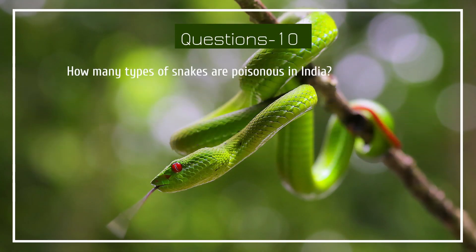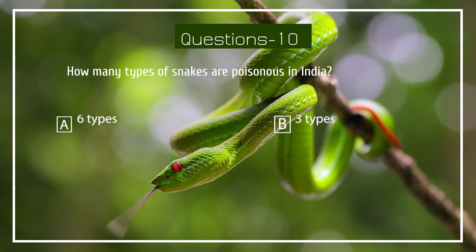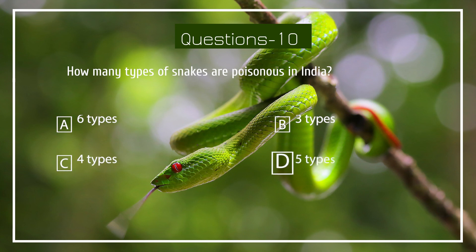How many types of poisonous snakes are there in India? Options: 6 types, 3 types, 4 types, 5 types.